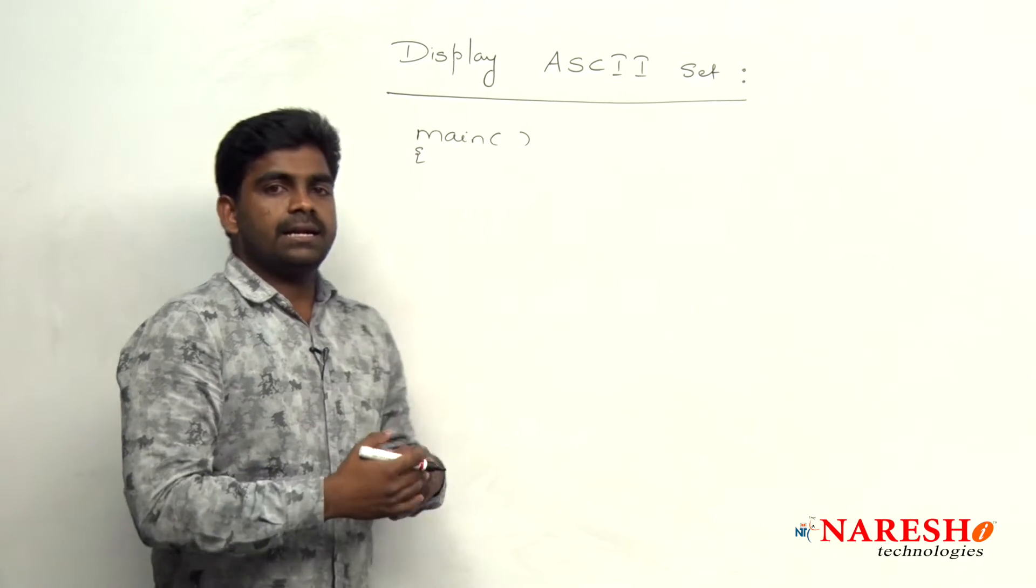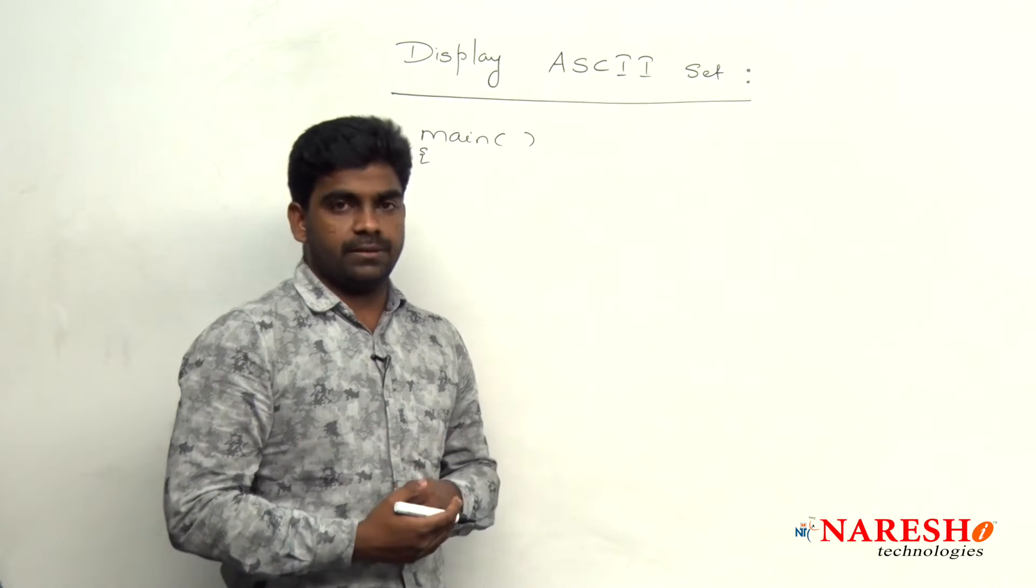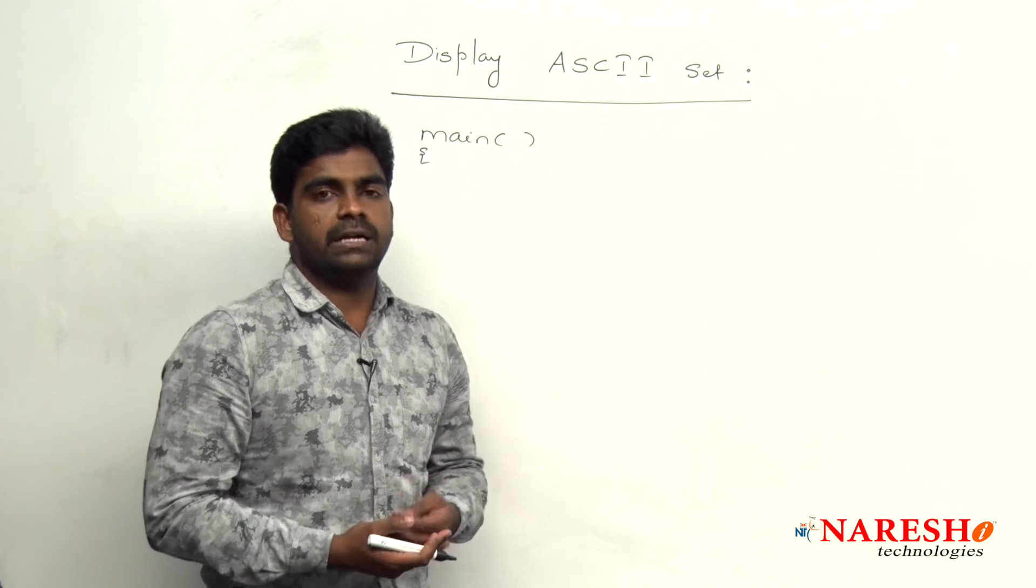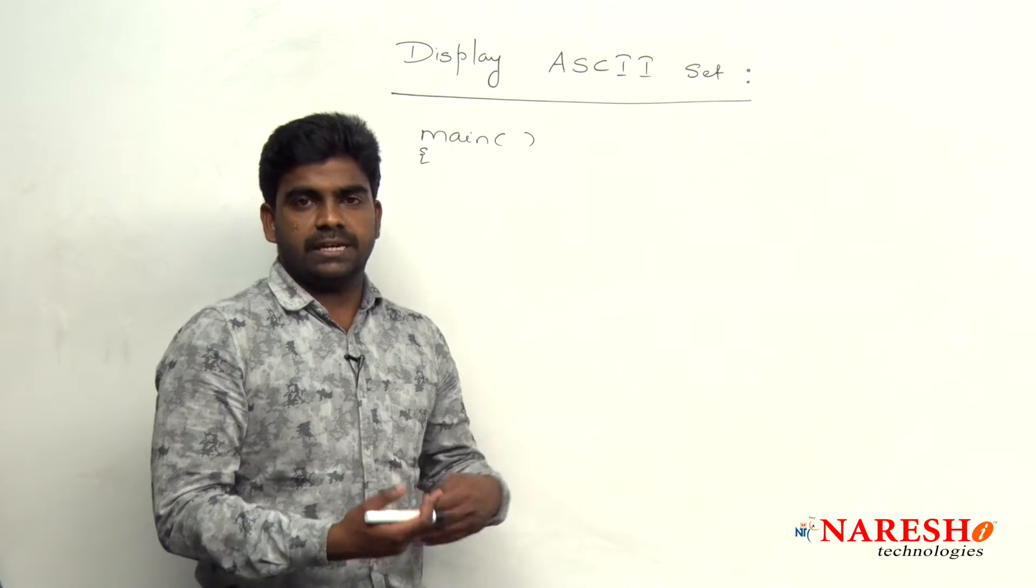We know the ASCII character range is from 0 to 255. So, 256 times we cannot write a printf function, the statement we cannot use.